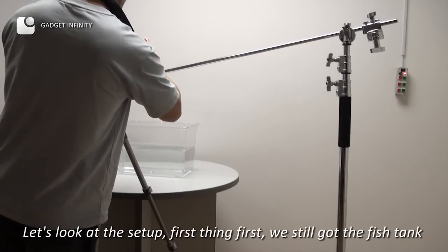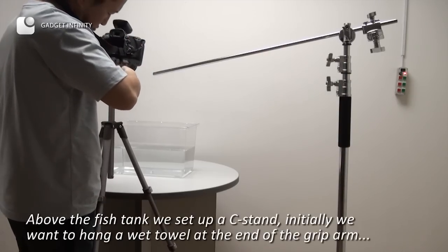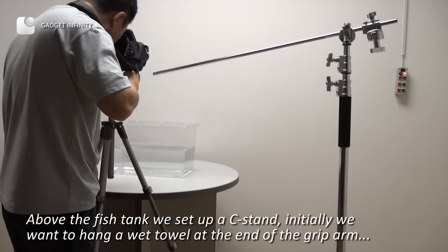First thing first, we still got the fish tank. Above the fish tank, we set up a C-stand. Initially, we want to hang a wet towel at the end of the grip arm.